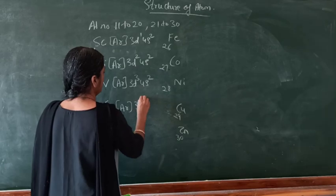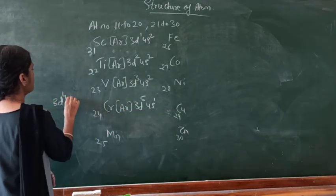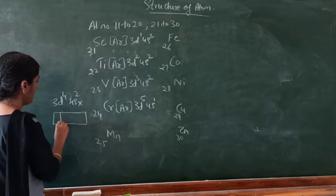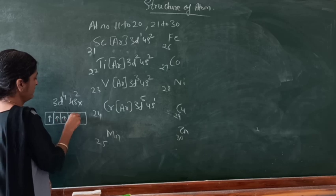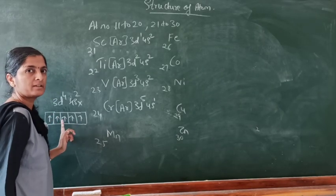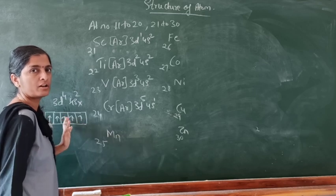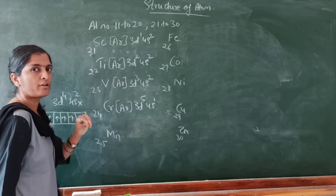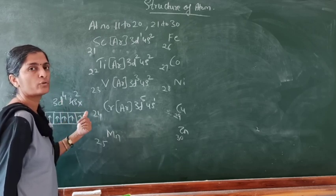Why is chromium 3d⁵, 4s¹ and not 3d⁴, 4s²? Because in 3d⁵ each of the 5 d orbitals contains exactly 1 electron — this is a symmetrical, equal distribution. That is why this electronic configuration is more stable. This is due to the half-filled d orbitals. If an orbital contains only 1 electron, we call it half-filled; if it contains 2 electrons, it is completely filled.